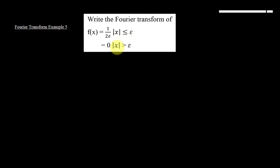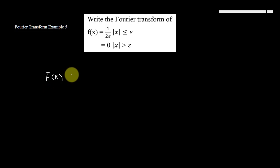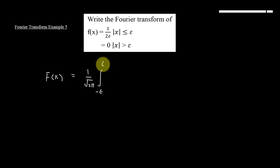تو دوستو یہاں پہ f(x) کی value جو ہے وہ بن جاتی ہے 1/(2ε) جب x کی value equal to epsilon ہو یا less than epsilon ہو، اور جب x کی value epsilon سے بڑھ جاتی ہے تو f(x) کی value 0 بن جاتی ہے۔ تو یہاں پہ ہم نے Fourier transform کو find out کرنا ہے۔ equation of Fourier transform is f(k) = 1/√(2π) integration from minus epsilon to plus epsilon of f(x) e^(iKx) dx.